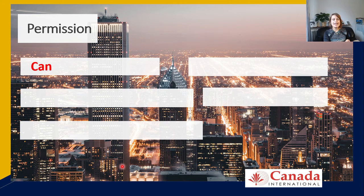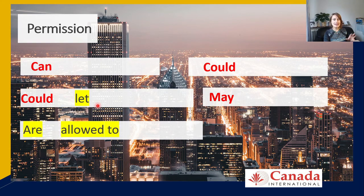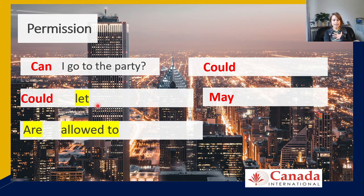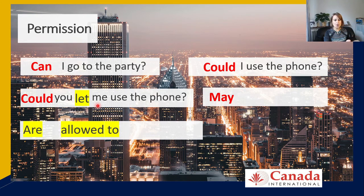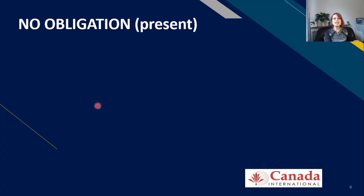For permission, the modal verbs — in red — are can, could, and may. The phrases — in yellow — are let and to be allowed to. Examples: 'Can I go to the party?' 'Could I use the phone?' 'Could you let me use the phone?' 'May I use the phone?' 'Are we allowed to use the phone?'